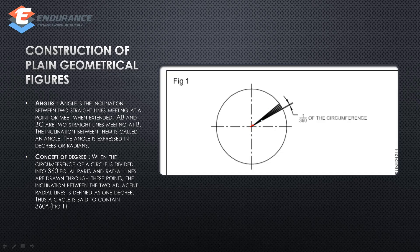There are many ways to express an angle. If you express an angle, you will express it in degrees or radians. The concept of degree: when the circumference of a circle is divided into 360 equal parts, for example, if you have a circle, the circle is equal to 360 degrees.